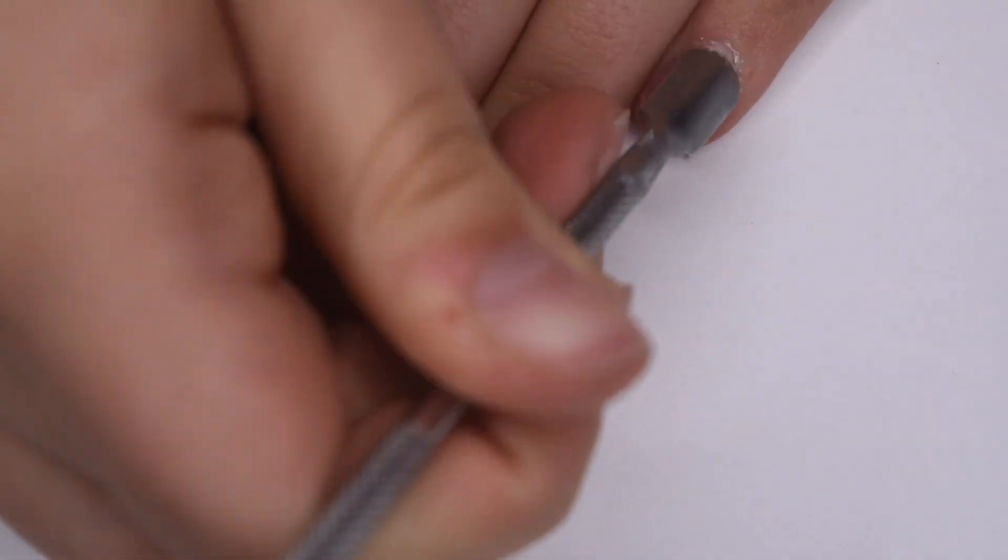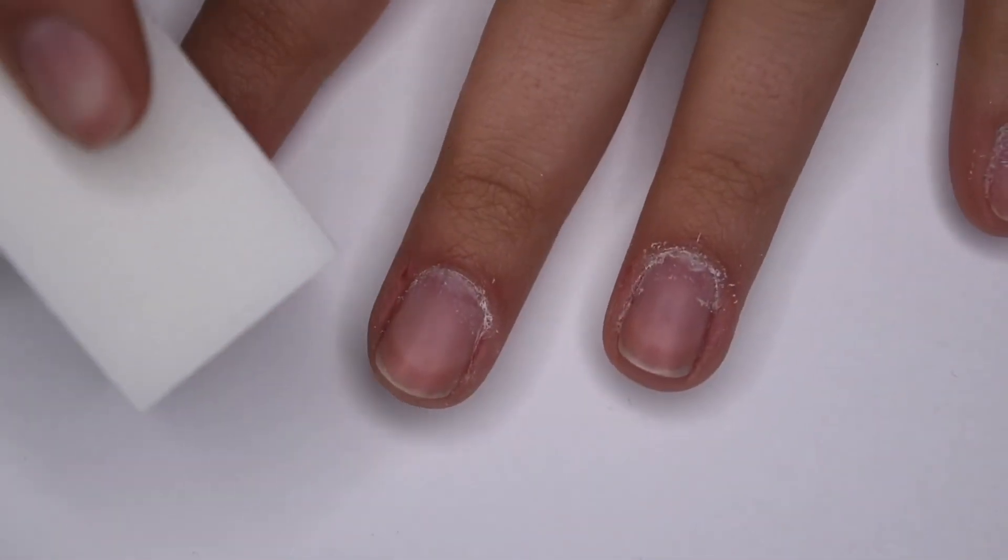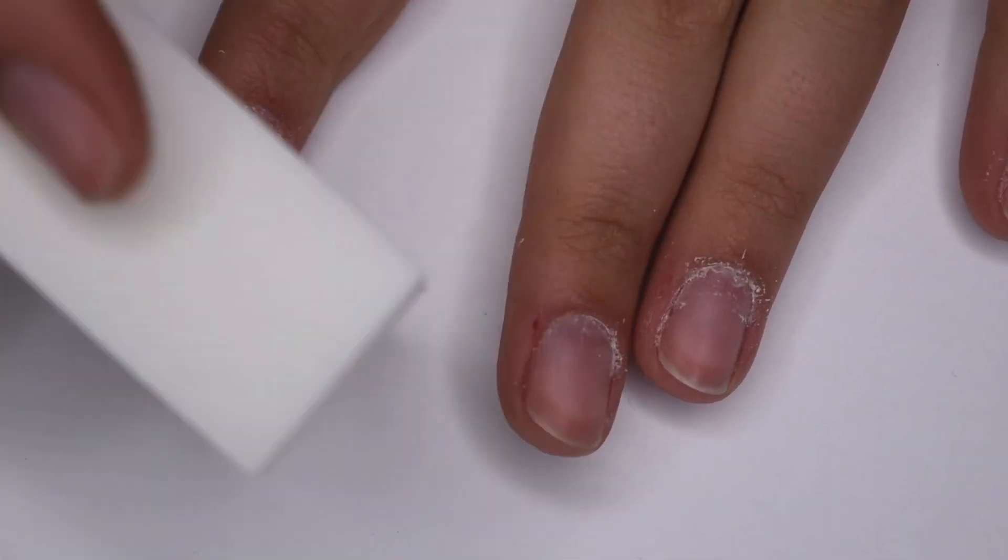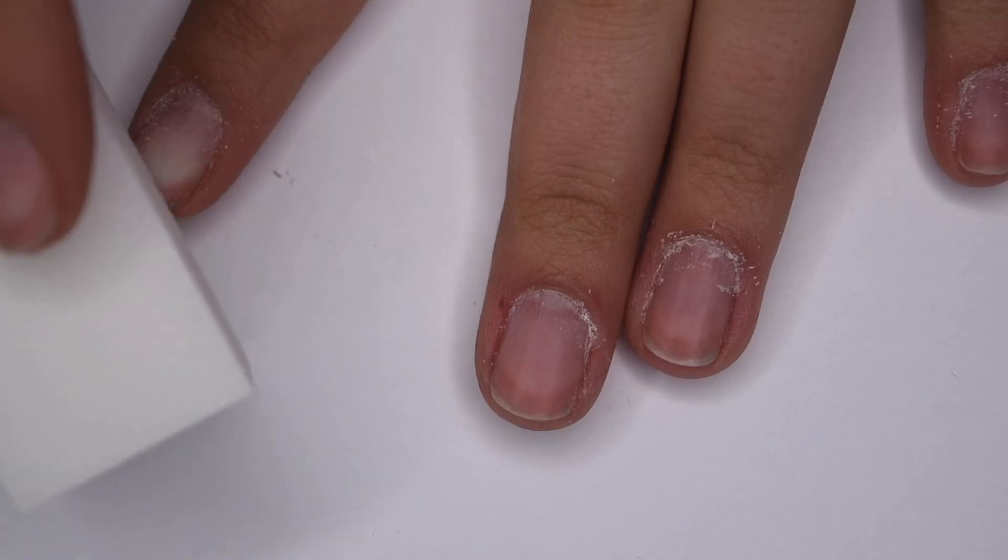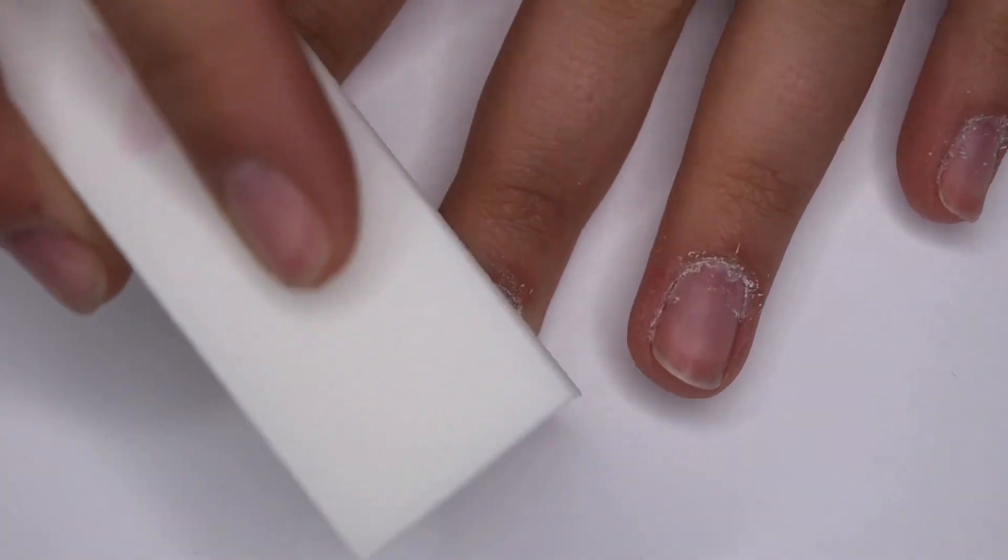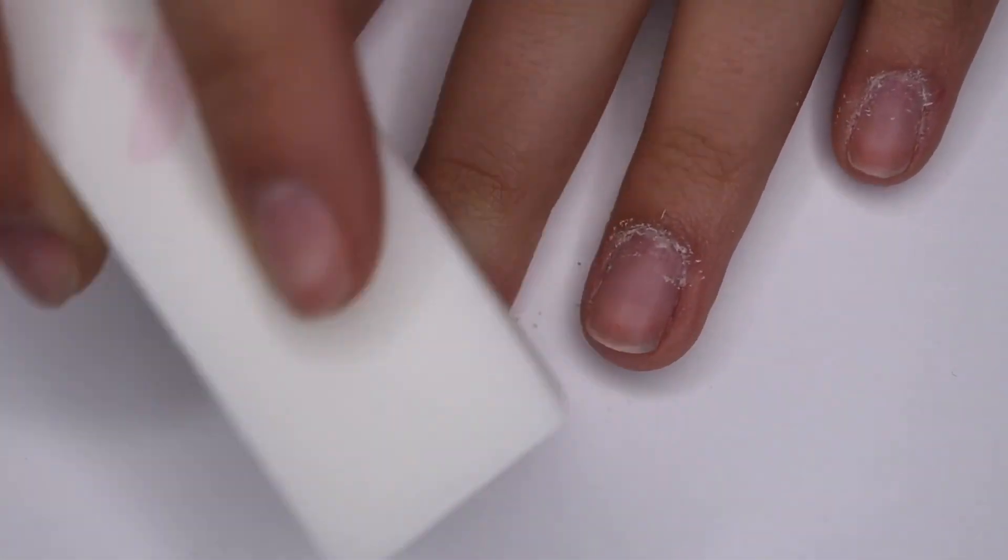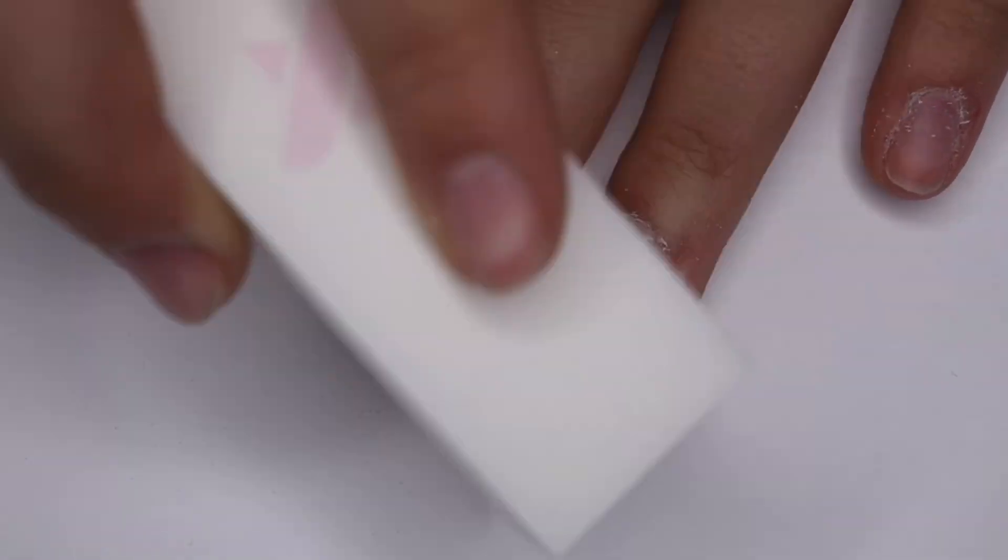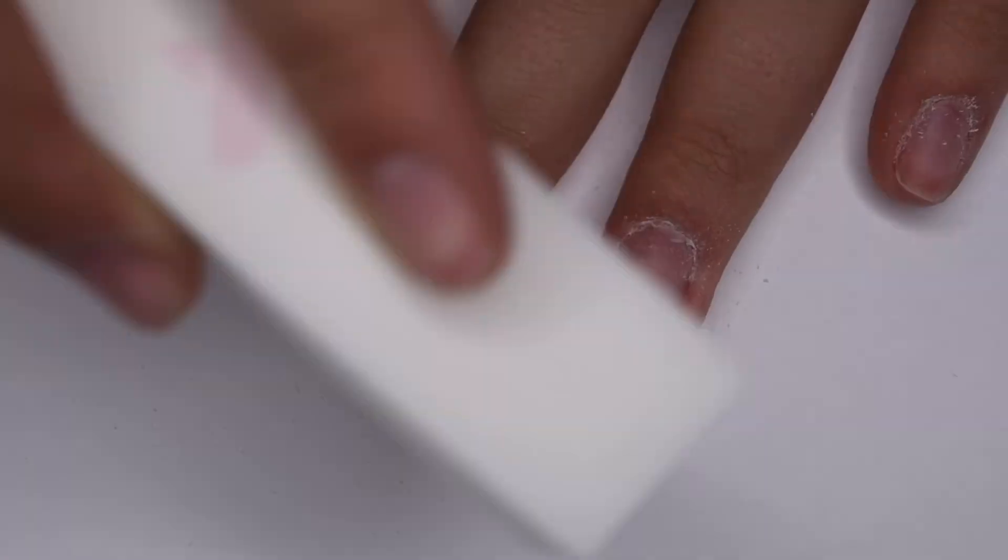And then once I've completed doing that, I'm going to go in with my olive in June nail buffer. And I'm just going to roughen up the surface of the nail and take off the surface shine. Now, you don't want to take off layers of your natural nail doing this. You're just roughening up the first layer of the natural nail and taking away the shine.